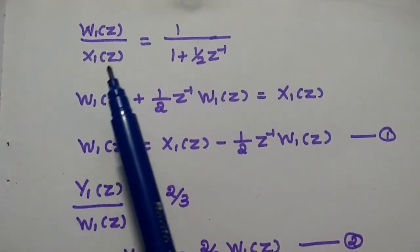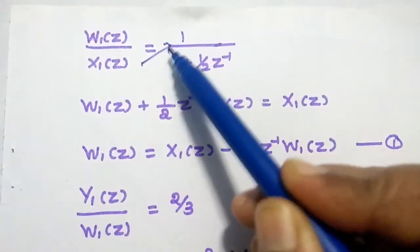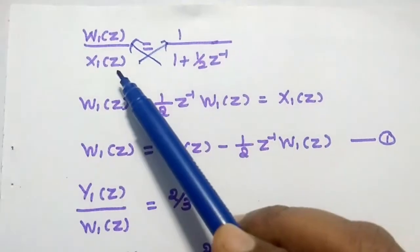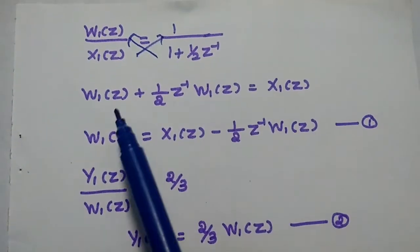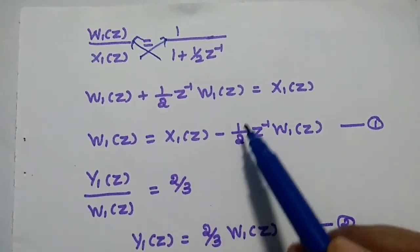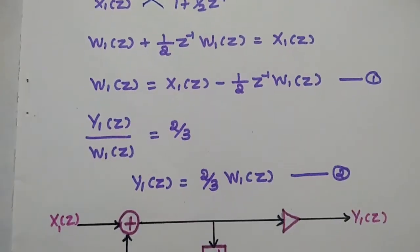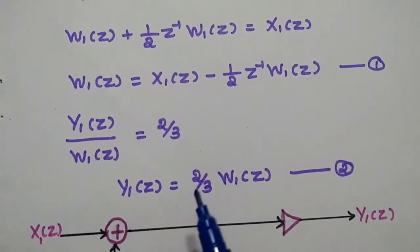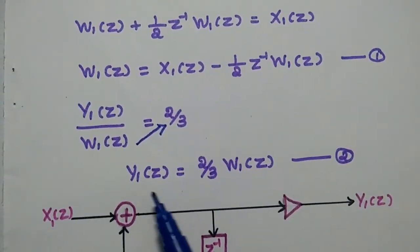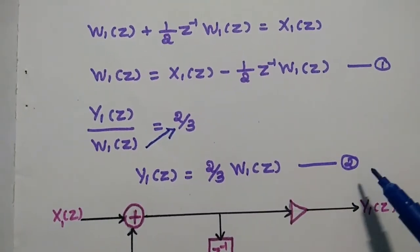Taking W1(Z)/X1(Z) equal to 1 divided by (1 plus 1/2 Z power minus 1) and cross multiplying, we get W1(Z) plus 1/2 Z power minus 1 times W1(Z) equals X1(Z). Keeping W1(Z) on the left, we get W1(Z) equals X1(Z) minus 1/2 Z power minus 1 W1(Z) — this is the first equation. The next term gives Y1(Z)/W1(Z) equals 2/3, so Y1(Z) equals 2/3 times W1(Z) — this is the second equation.